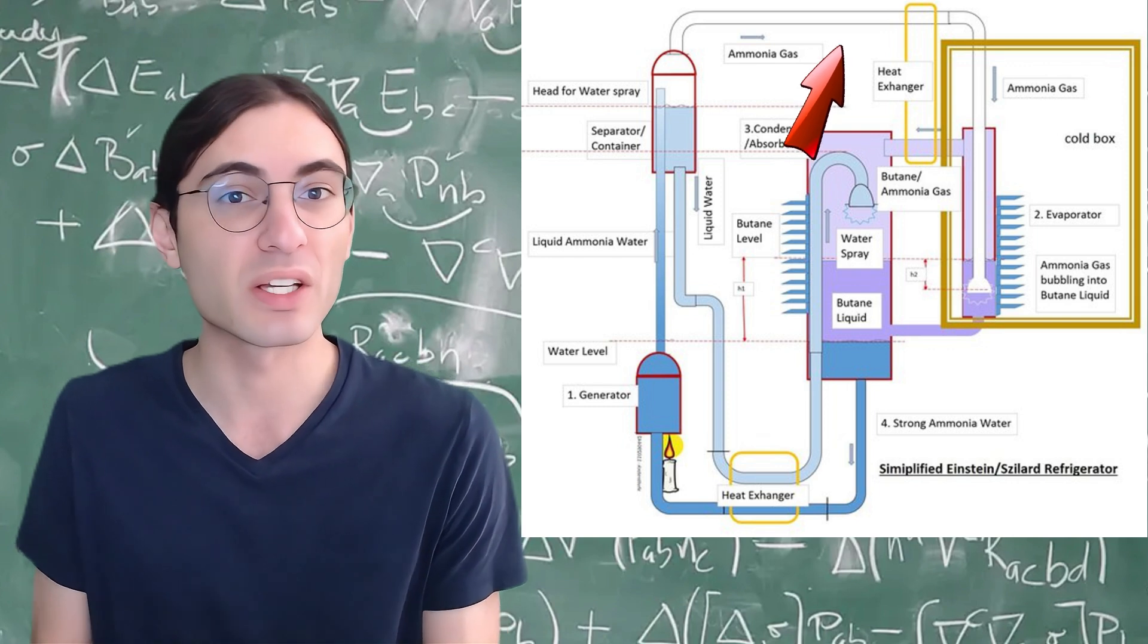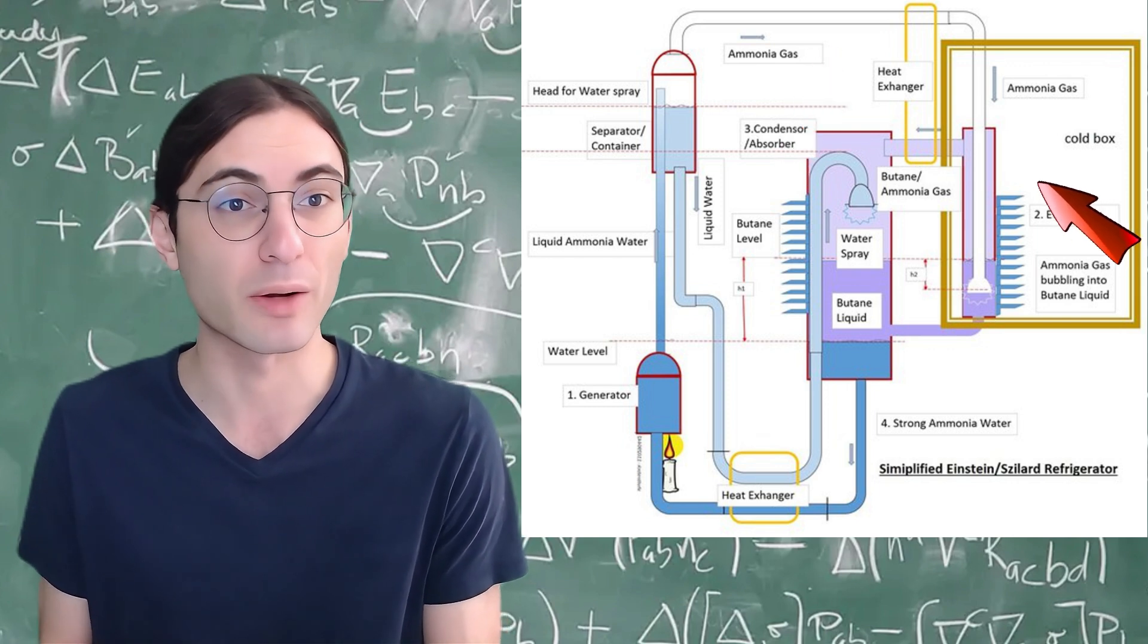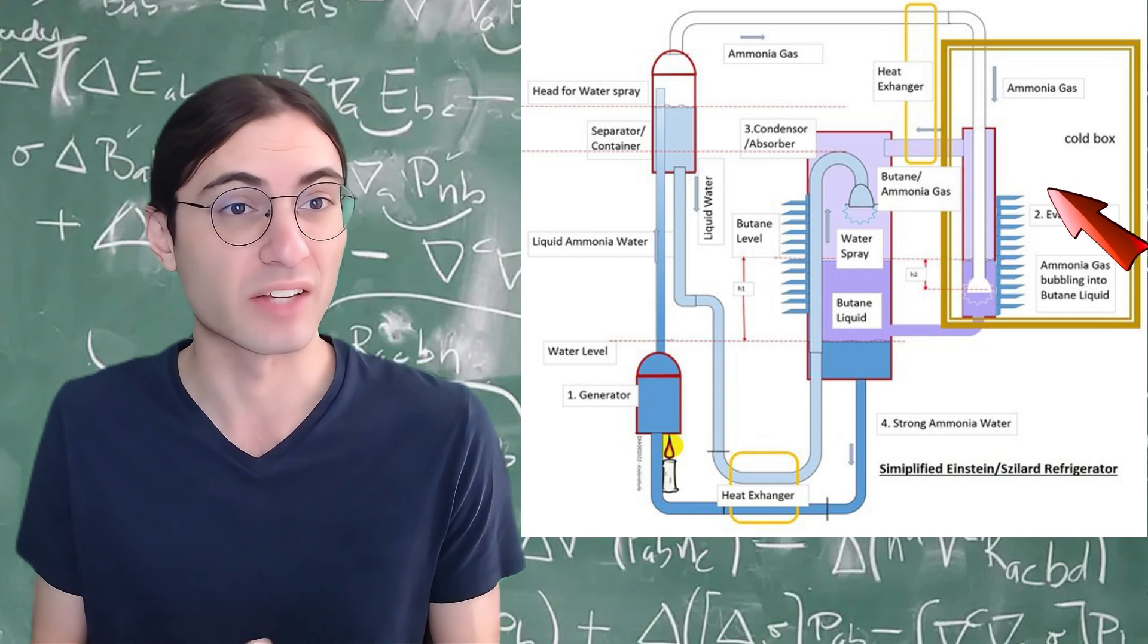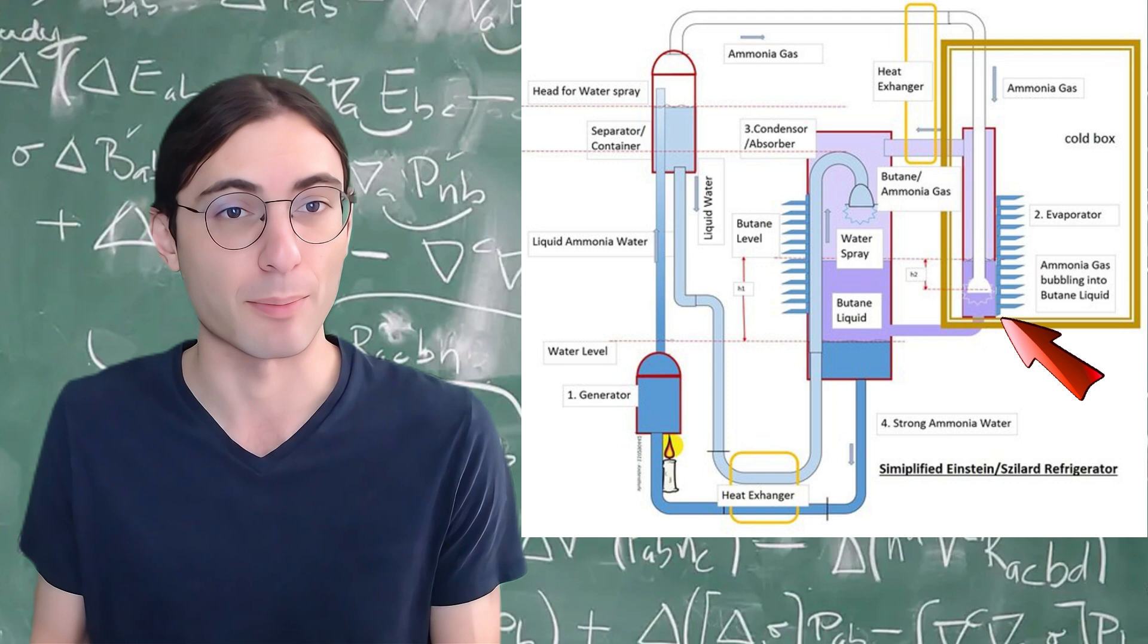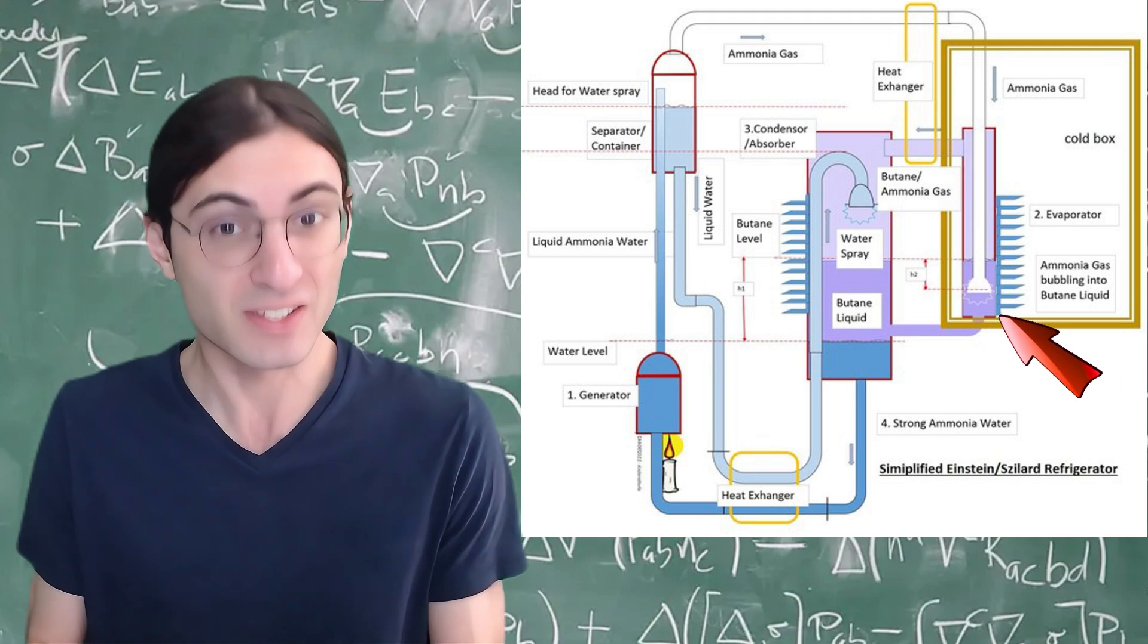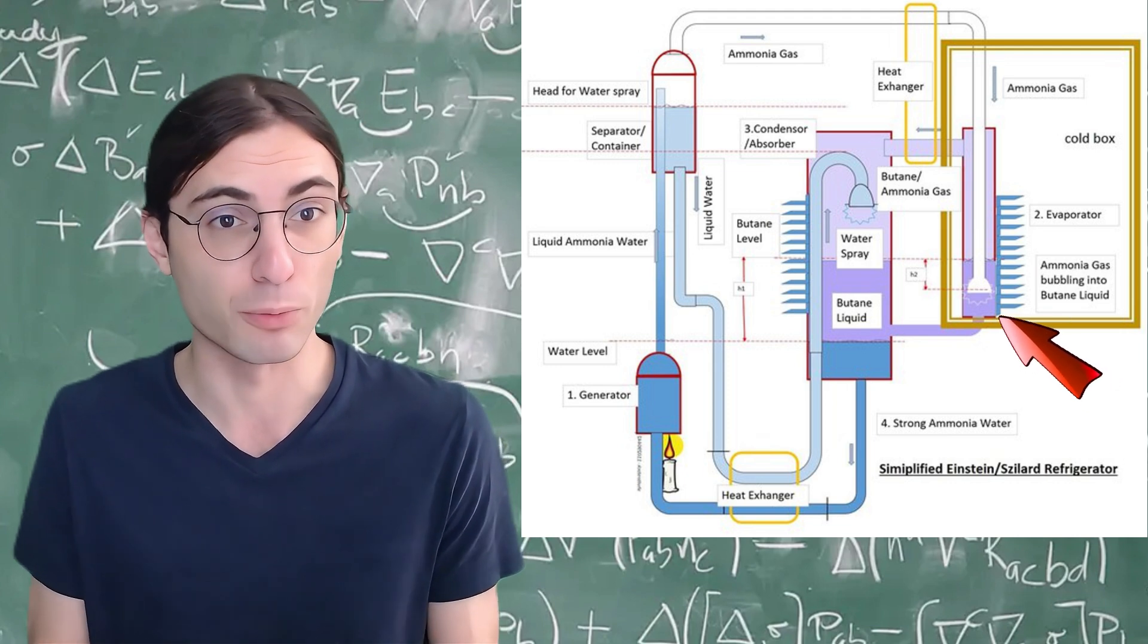This gaseous ammonia is then forced into the evaporating chamber where it mixes with the butane. And because the ammonia takes up space, there's less butane in the chamber, so the liquid butane at the bottom evaporates, taking some heat with it. This is the heat that is removed to refrigerate the cold box.